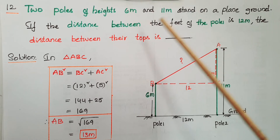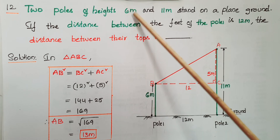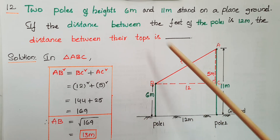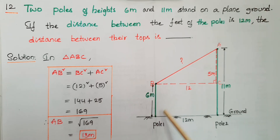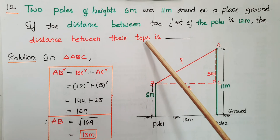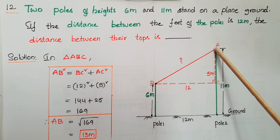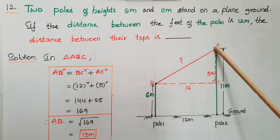This is the 11th problem. Two poles of height 6 meters and 11 meters stand on plain ground. The distance between the feet of the poles is 12 meters. We have to find the distance between the tops — that is, between the top of the first pole point B and the top of the second pole point A. We need to find distance AB.